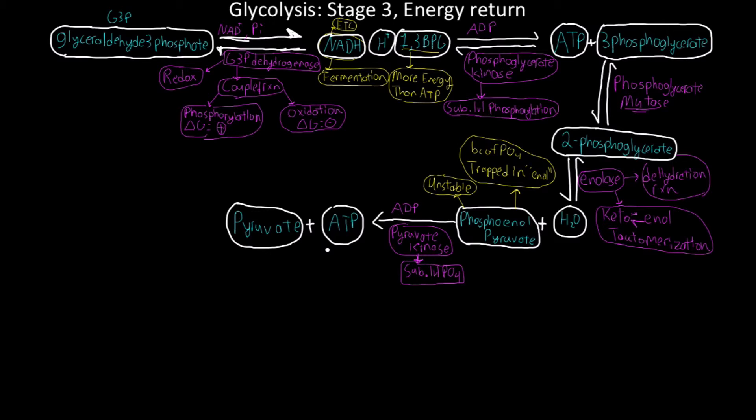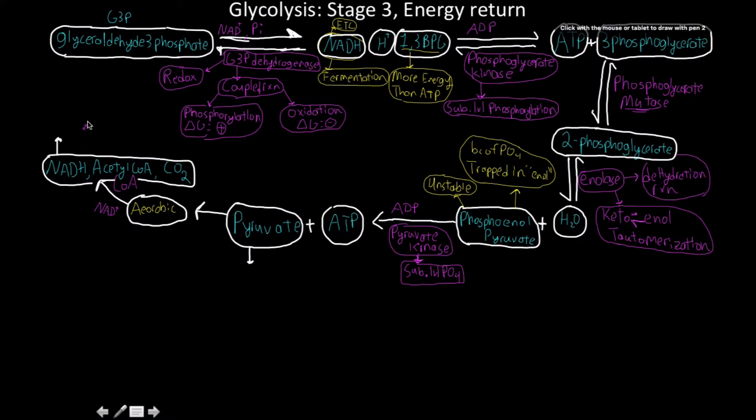What happens next to pyruvate depends on the structure, function, and metabolism of your cell, and the environment that the cell is in. If it has an aerobic environment with access to oxygen, pyruvate is going to go on and take part in the electron transport chain and the citric acid cycle. It's going to react with CoA and NAD+, resulting in the production of acetyl CoA, NADH, and CO2. That is going to go on to the other parts of the Krebs cycle and then the electron transport chain.